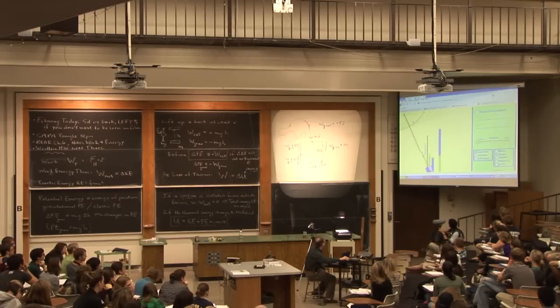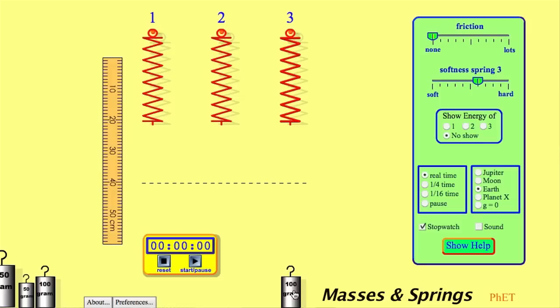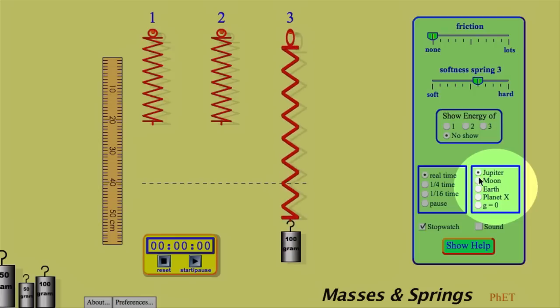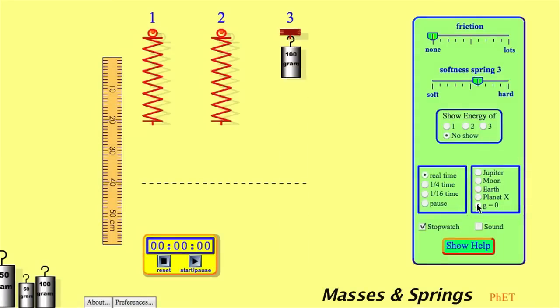What happens to the period of oscillation of a mass on a spring if I increase gravity? A lot of students voted that the period should increase because the spring stretches more. And if it stretches more, it's somehow tighter, so it'll go back and forth. And we show that easily by just clicking on, okay, let's go to Jupiter. Or let's go to the space shuttle where we've turned gravity off. And we see that it oscillates the same period.